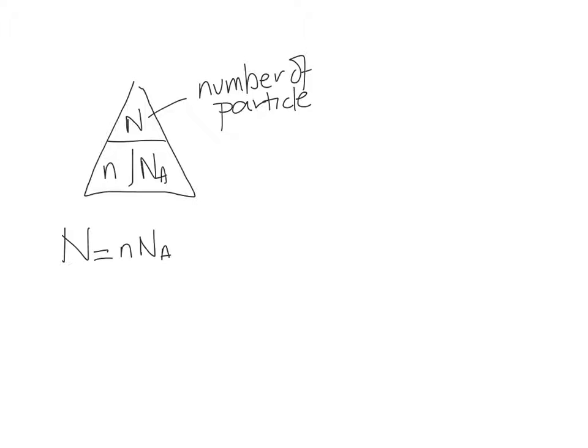So big N is the number of particles. Number of particles - if a question says how many, then the units are going to be atoms or molecules or formula units. NA is always the same thing, Avogadro's number.